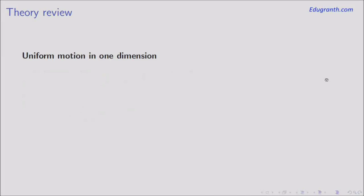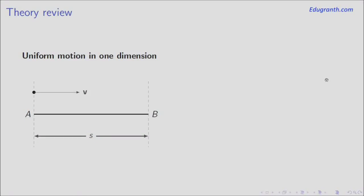Let us see uniform motion in one dimension. Let A and B be two points separated by a distance S. A point moves from A to B with a constant velocity V. Then the time taken for this motion is given by T equals S over V, or we can also write S equals VT, so this distance A to B also equals velocity into time.